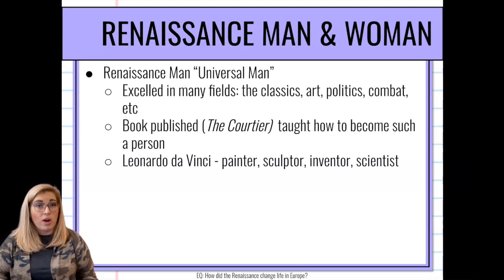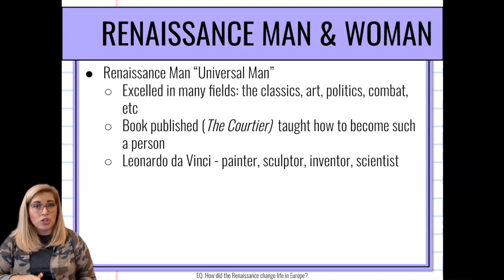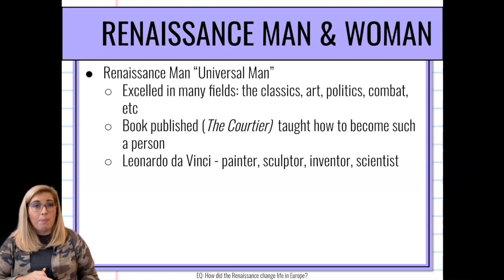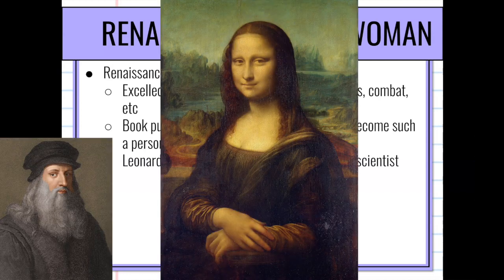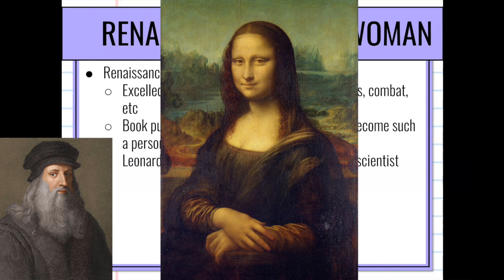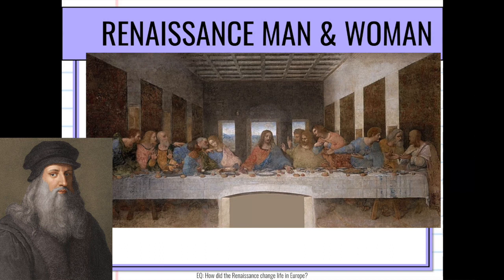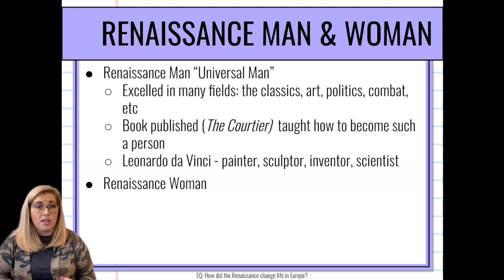A very famous Renaissance man from this time period would be Leonardo da Vinci — a very famous painter, sculptor, inventor, and scientist. Two works you might know: he painted the Mona Lisa, pictured here, and he also painted the very famous religious portrait, the Last Supper. So those are two things he's very well known for, but he did many other things as well.